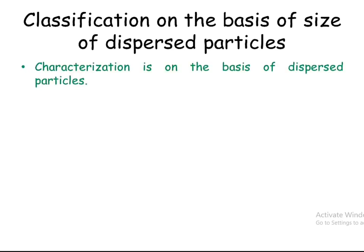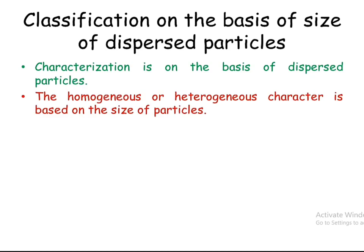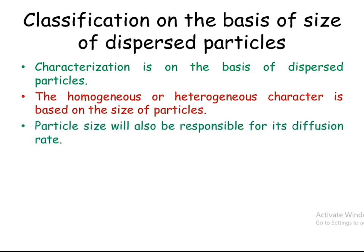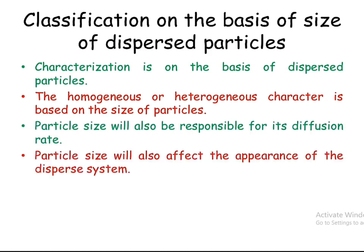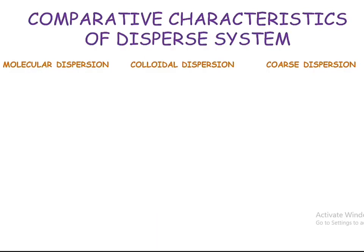In the classification by particle size, dispersed systems are characterized on the basis of particle size. This defines whether the system will be homogeneous or heterogeneous in character. Particle size is also responsible for the diffusion rate and affects the appearance of the dispersed system, such as turbidity and clarity.